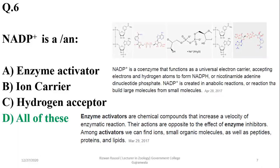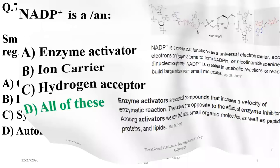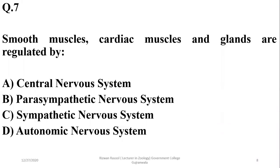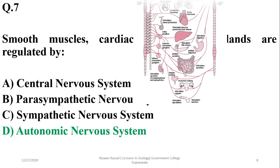Question 7: Smooth muscles, cardiac muscles and glands are the involuntary target organs affected. These are controlled by the autonomic nervous system, including both sympathetic and parasympathetic divisions. So the best option is delta.